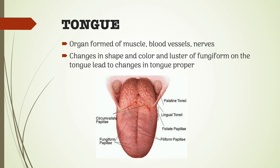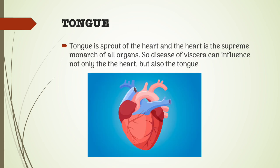The tongue is an organ formed of muscle, blood vessels, and nerves. The changes in the shape and color and luster of the fungi form on the tongue lead to changes in the tongue proper. The tongue is the sprout of the heart, and the heart is the supreme monarch of all organs, so disease of viscera can influence not only the heart, but also the tongue.